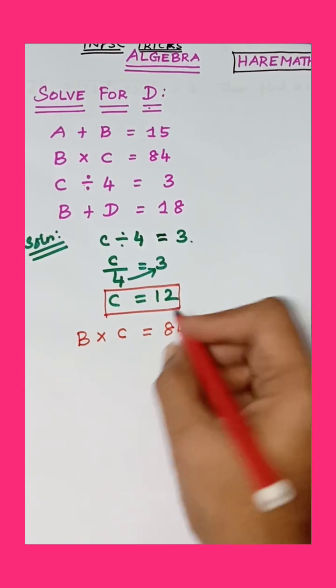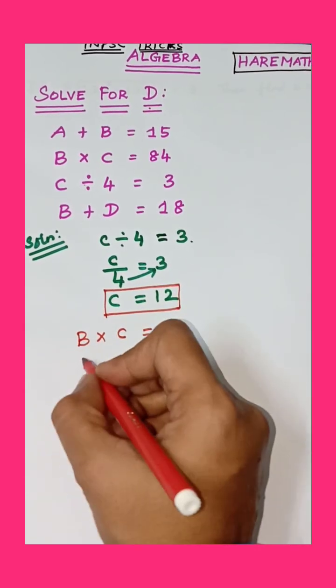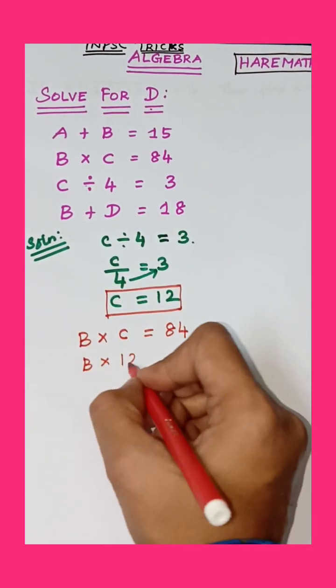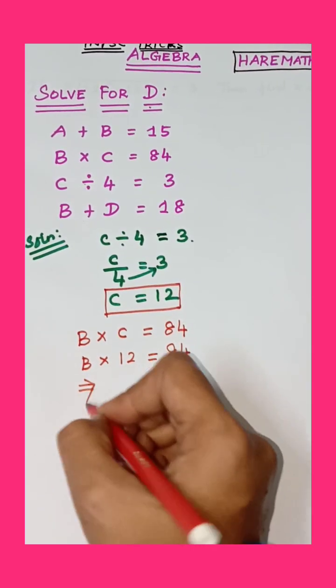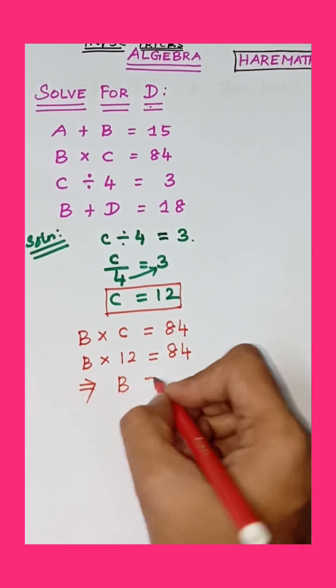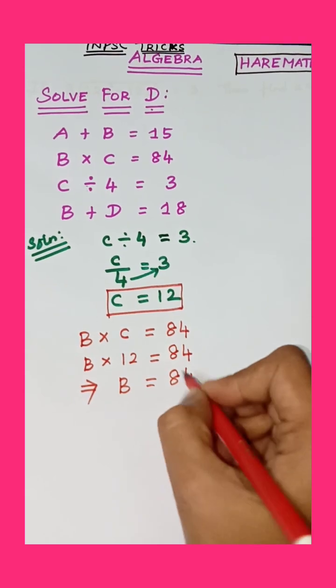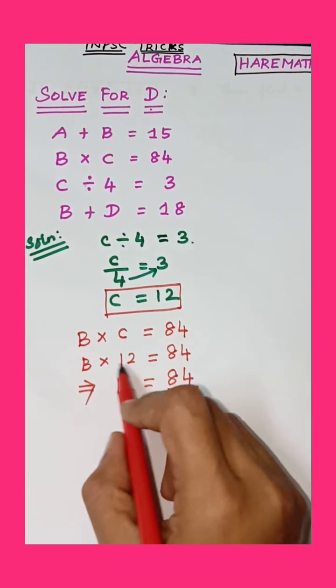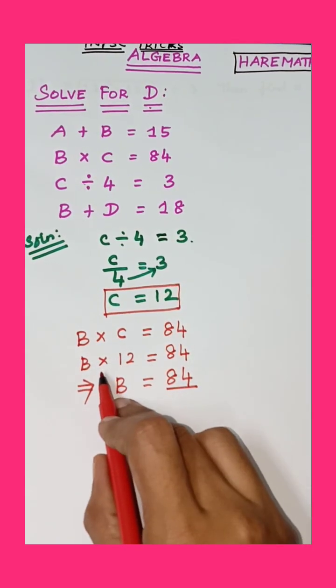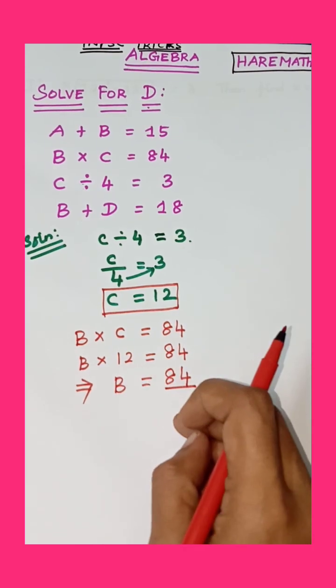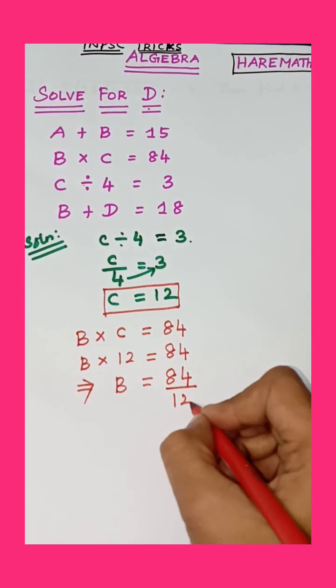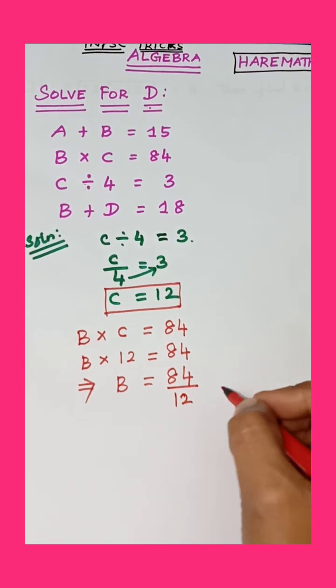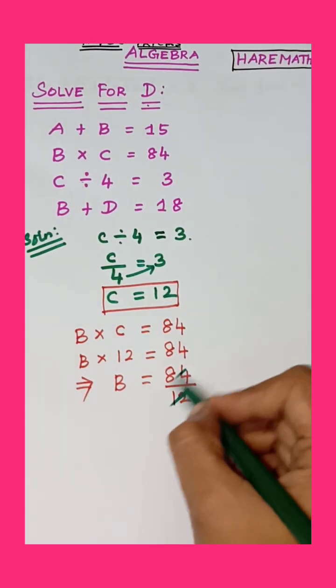B times C equals 84. Substitute the value 12: B times 12 equals 84. This implies B equals 84 divided by 12. Multiplication on left hand side, right hand side is division. B equals 84 by 12.